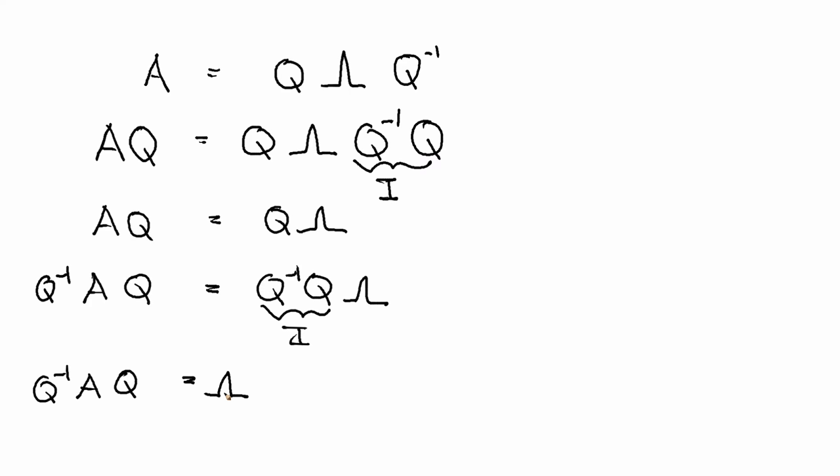So this is a special property of a matrix of eigenvectors. If we take any matrix of eigenvectors, so we know Q is the eigenvectors of A, if we perform this operation on it, it will diagonalize A. And this is in fact how we're going to use eigenvectors.